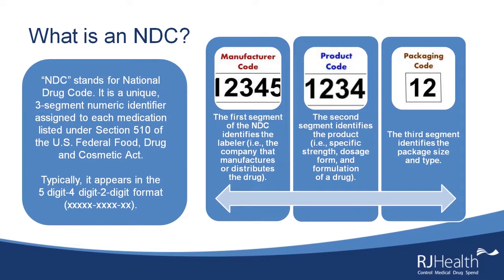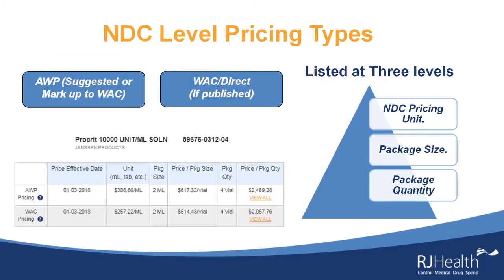We will see 10-digit NDCs, and typically a leading zero would need to be added into the different segments. For example, if a manufacturer code only had four digits — say, 1234 — we would add the leading zero to make it 01234. The same applies to the product code. For the package code, simply leave a leading zero.